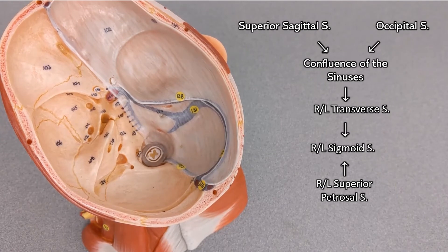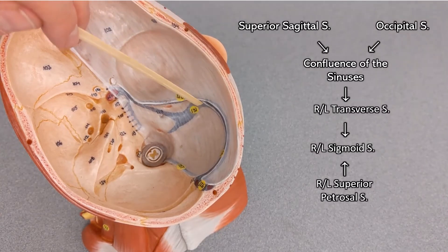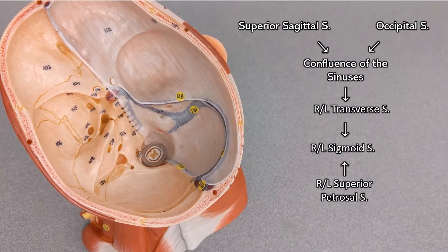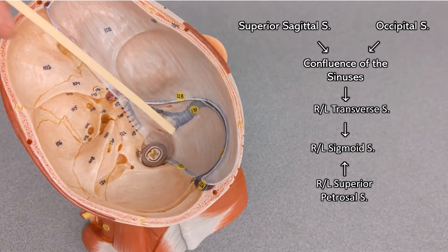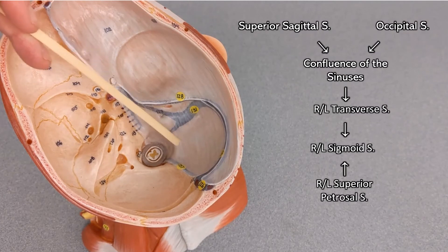So the transverse and superior petrosal sinuses meet up with the sigmoid sinus and the sigmoid sinus drains into the internal jugular vein. The internal jugular vein begins at about the same area as the jugular foramen so right before it exits the skull and goes on to the neck.